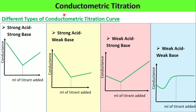Welcome to today's session. We are going to discuss what is meant by conductometric titrations and the different types of conductometric titration curves. We have four different types of curves: curve for strong acid-strong base, strong acid-weak base, weak acid-strong base, and weak acid-weak base.